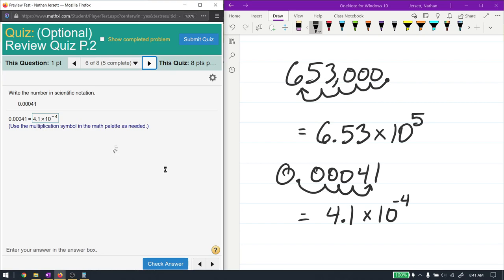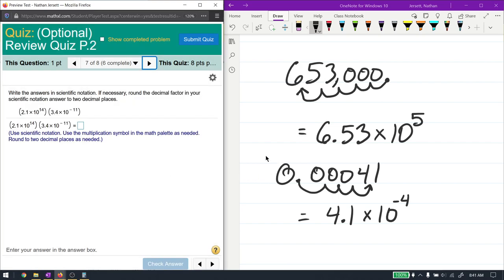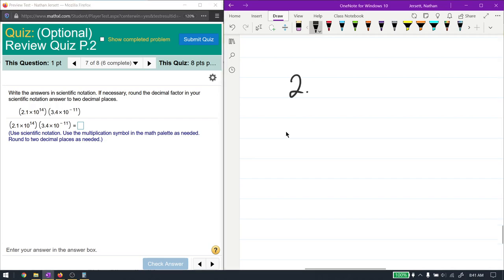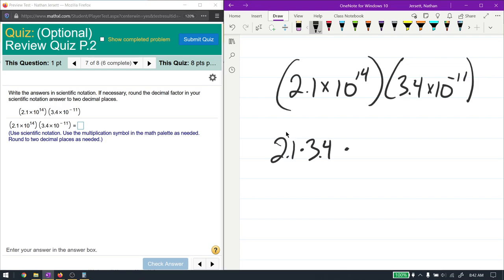Here we have two scientific notation numbers that are multiplying. These are pretty easy to handle because we can use properties of exponents. The rules we kind of went over in the previous problems. The first thing I'm going to do is I'm going to rewrite this with the common things next to each other. Those being the 2.1 and the 3.4. And then that's being multiplied by the 10 to the 14 and the 10 to the negative 11.